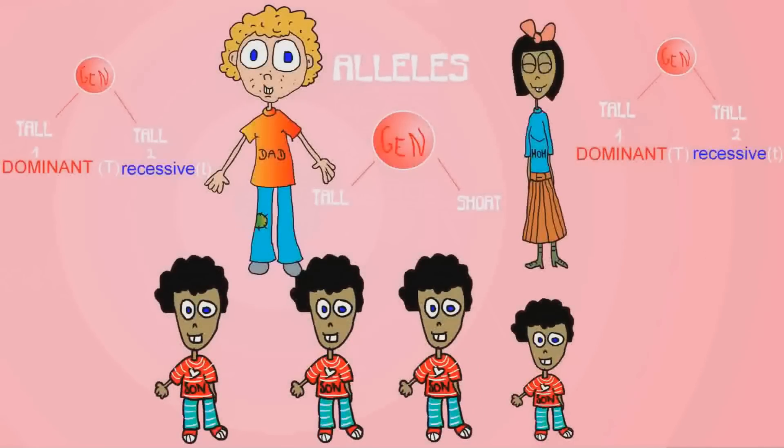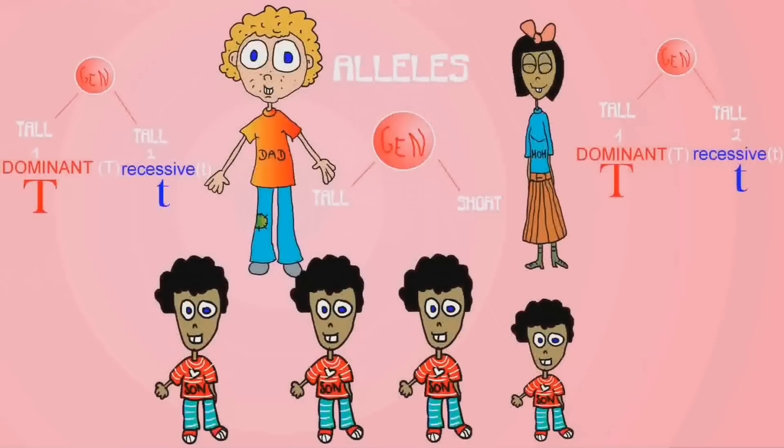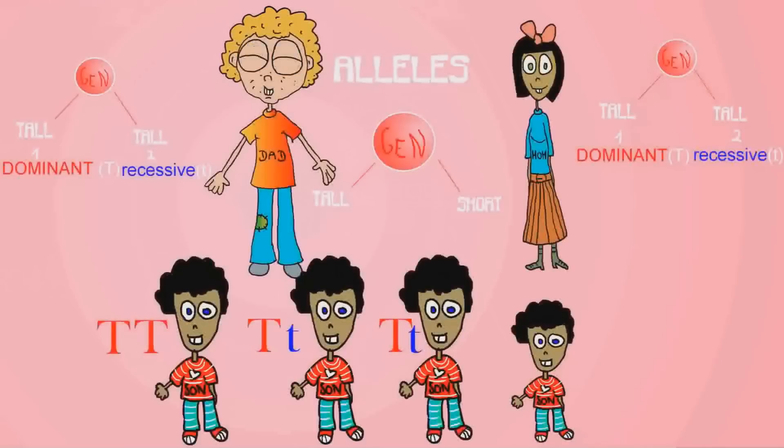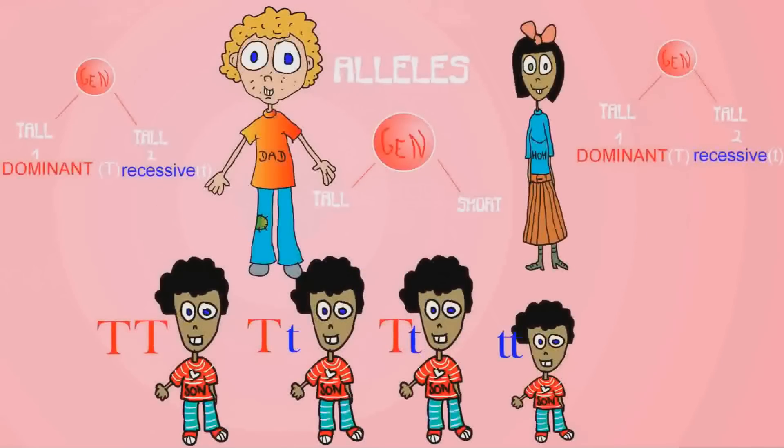For example, dominant big T, recessive little t. At least one dominant allele is needed to show the trait. Two dominant, still dominant. One dominant one recessive, it's still dominant. On the other hand, if there are two recessive alleles, then it does not show the trait.